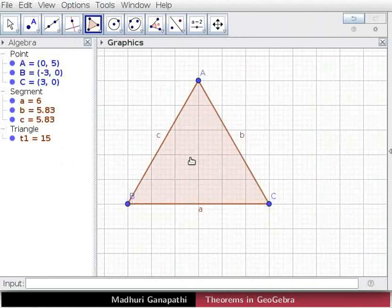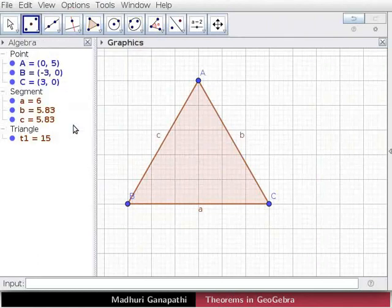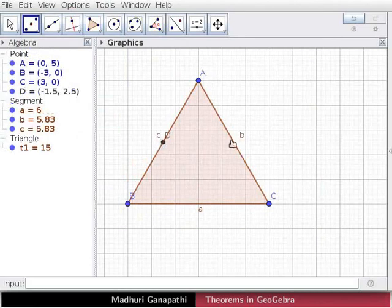Now we will find the midpoints of sides AB and AC. Click on the midpoint or center tool. Then click on the sides AB and AC.